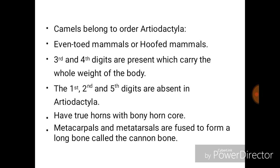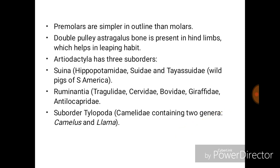The order Artiodactyla are basically the even-toed or hoofed mammals. The 3rd and 4th digits are present, which carry the whole body weight, and the 1st, 2nd, and 5th digits are absent. They have two horns with a bony horn core. Metacarpals and the metatarsus are fused to form a long bone called the cannon bone. Pre-molars are simpler in outline than the molars, and a double-pulley astragalus bone is present in the joints.